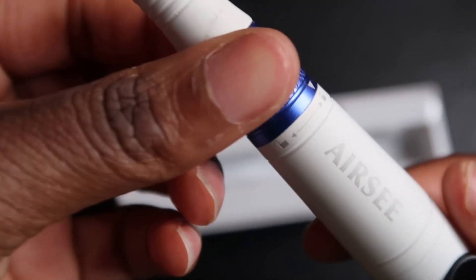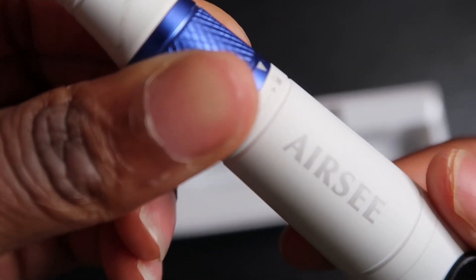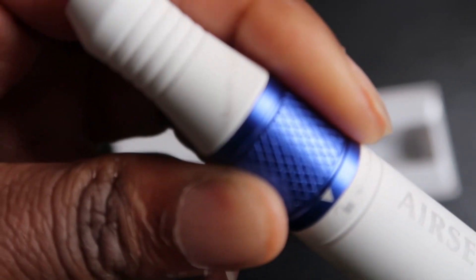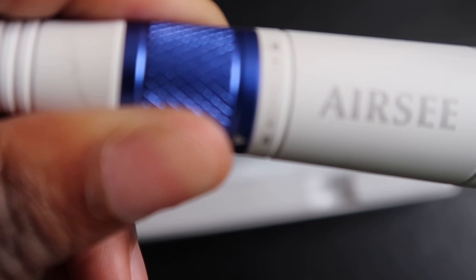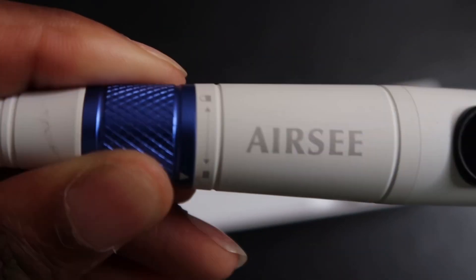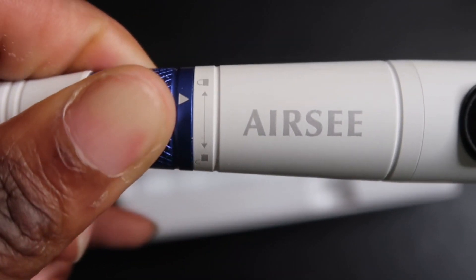Now this nail drill does have the lock and unlock mechanism, I guess that's what it's called, which I absolutely love. So you just twist it right to lock it and you twist it left to unlock it to be able to change your nail drill bits.